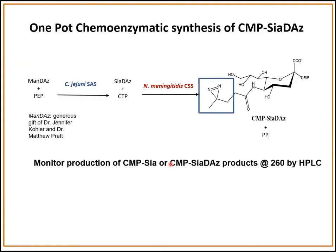To help us with this work, we are using chemo-enzymatic synthesis to synthesize a photocrosslinking derivative of CMP sialic acid. We are using as a precursor MANDAZ, which is a diazorine-containing derivative of N-acetylmannosamine — a generous gift of Jen Kohler and Matt Pratt. This diazorine-modified N-acetylmannosamine is reacted with phosphoenolpyruvate, and we use sialic acid synthase to make this diazorine-modified sialic acid. Next, we use CMP sialic acid synthetase to make CMP-SIA-DAZ, the nucleotide donor sugar with this photocrosslinking diazorine moiety.